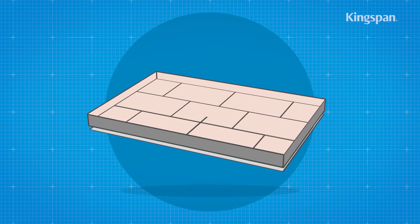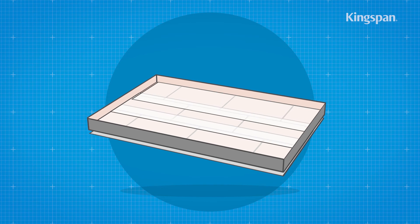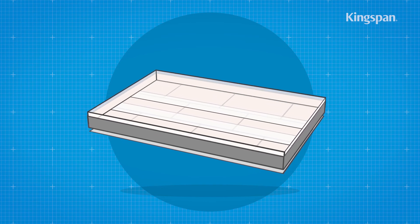Insulation boards should be overlaid with a suitable polythene sheet to act as a vapour control layer.